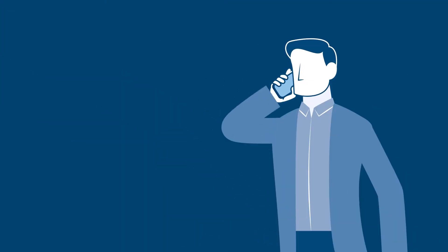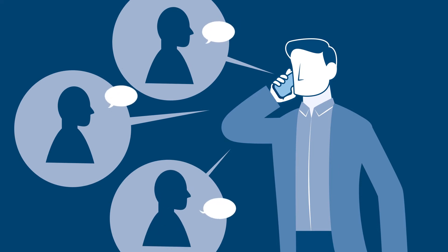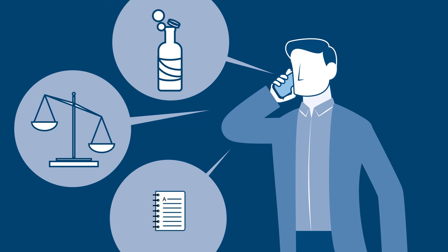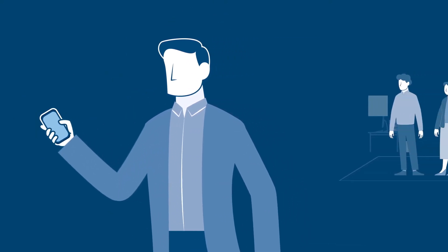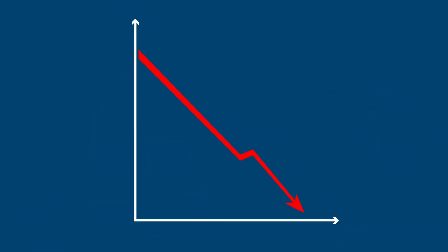Some leaders have a network they can rely on to bounce ideas off but those networks are often informal and have their own biases and agendas. And as a leader you may not be comfortable approaching that network for decisions that make you look vulnerable.